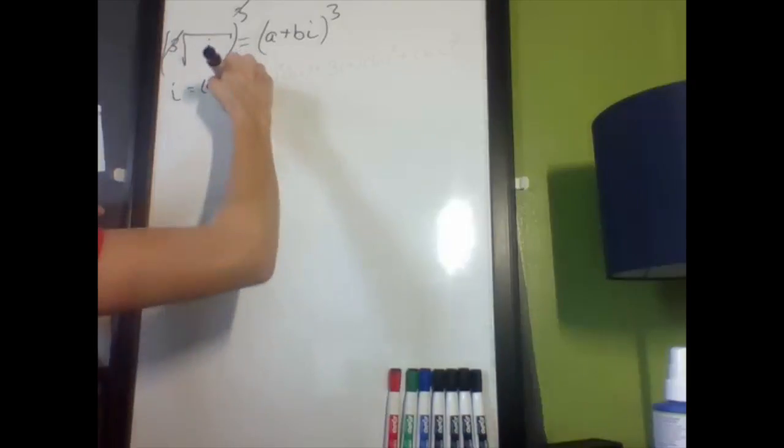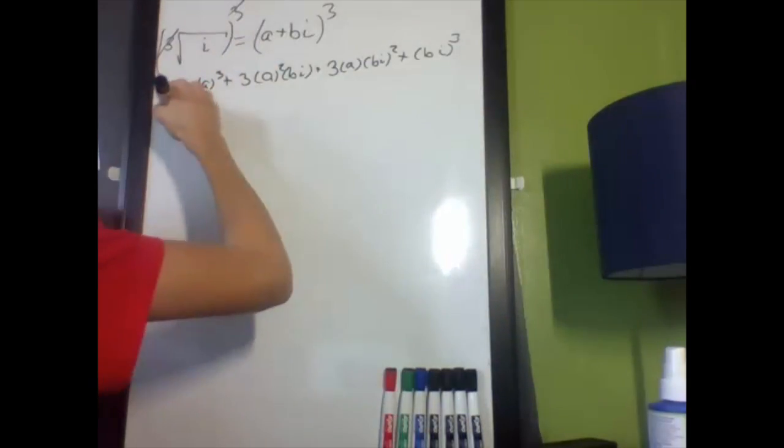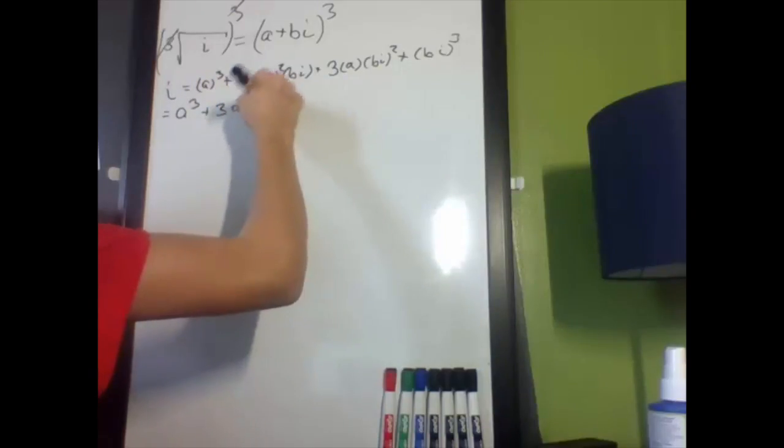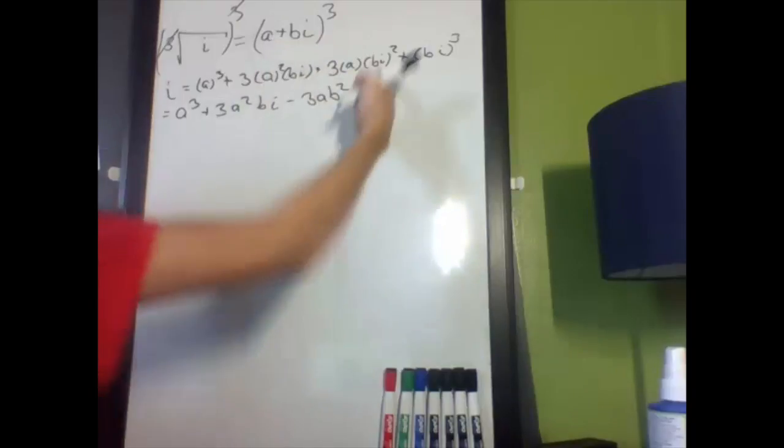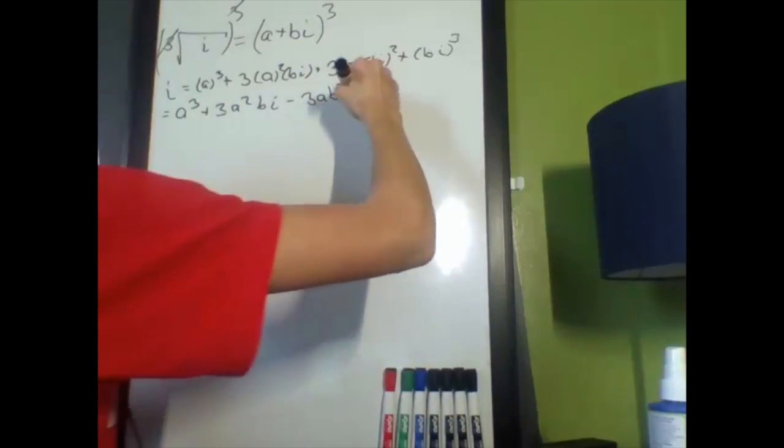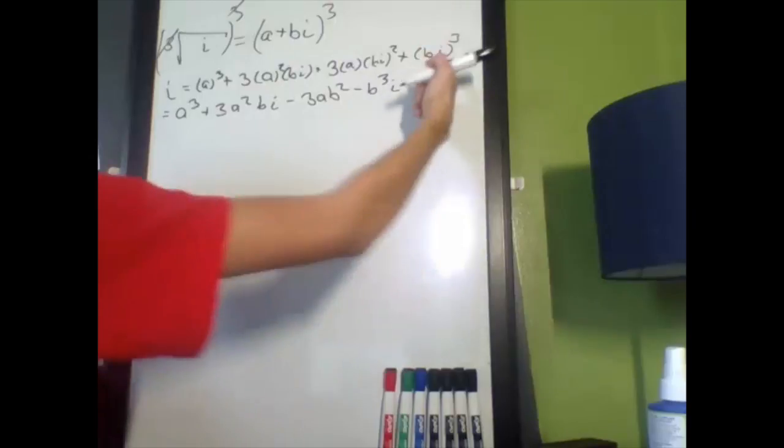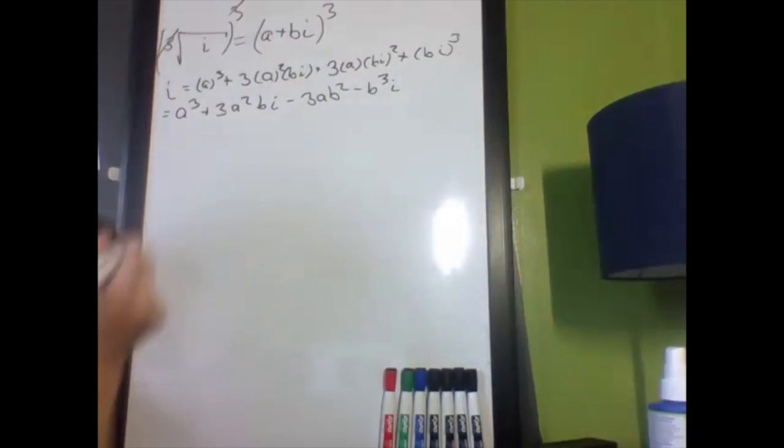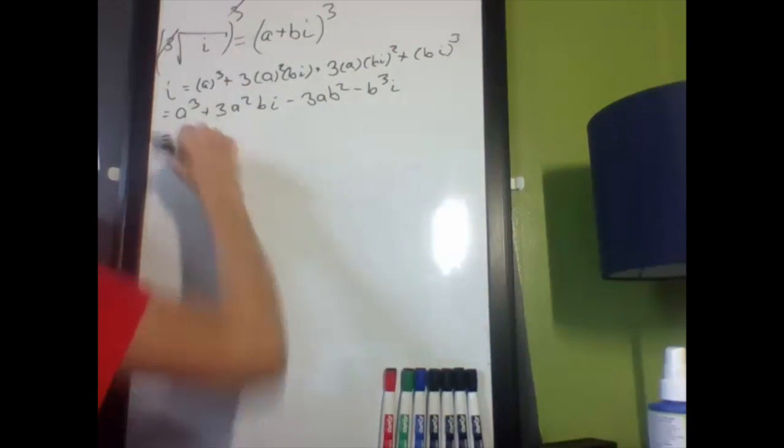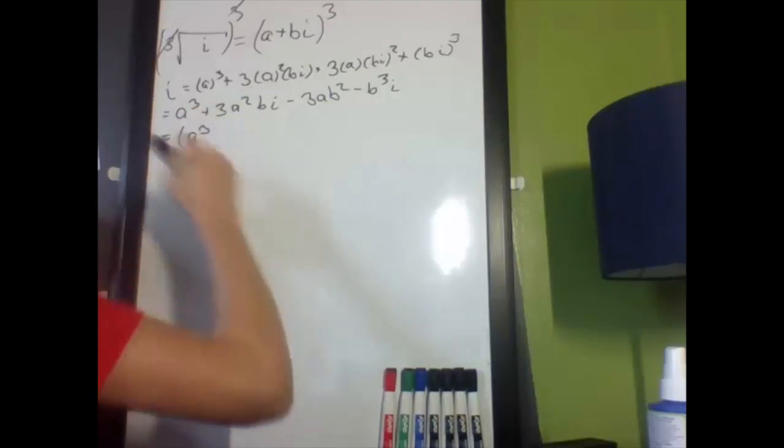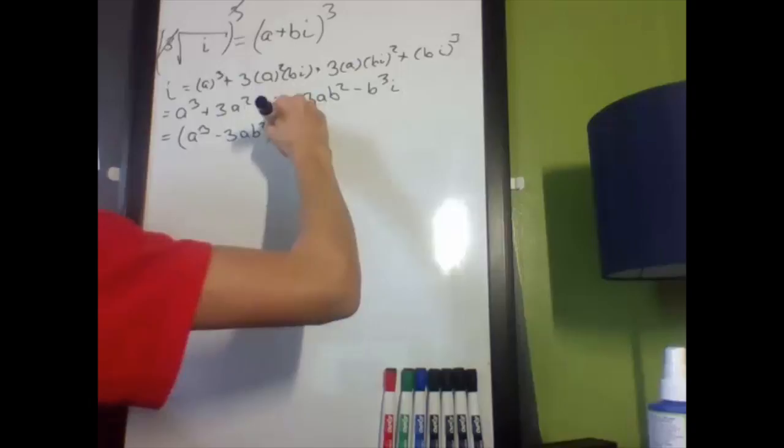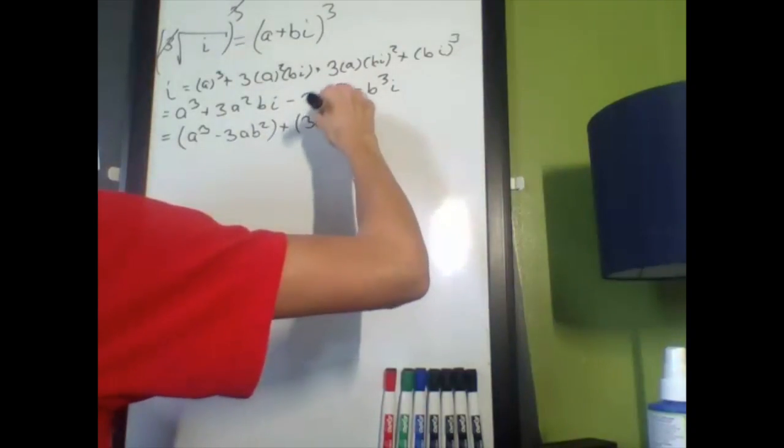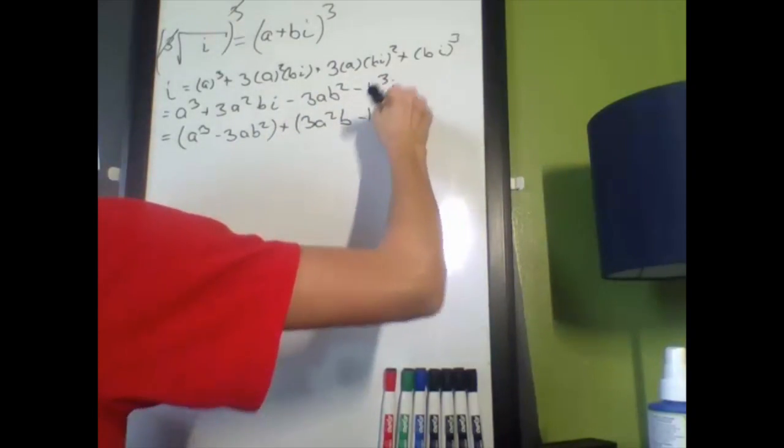Then I get i equals, using the binomial coefficient theorem, a cubed plus 3a squared bi, and then minus 3ab squared because i squared is negative 1, and then minus b cubed i because i cubed is minus i.